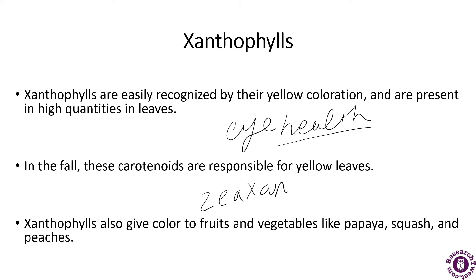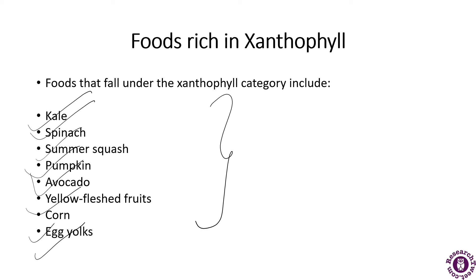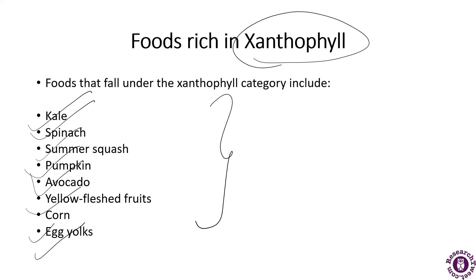Lutein and zeaxanthin fall under the xanthophyll category. Foods rich in xanthophylls include kale, spinach, summer squash, pumpkin, avocado, yellow-flesh fruits, corn, and egg yolk.